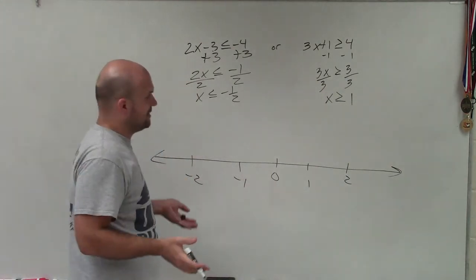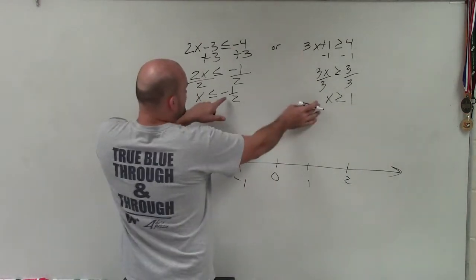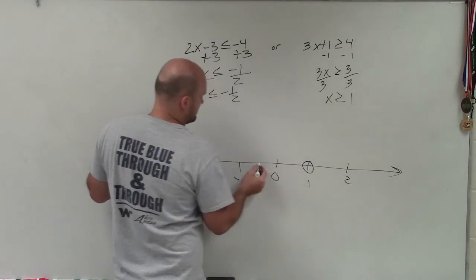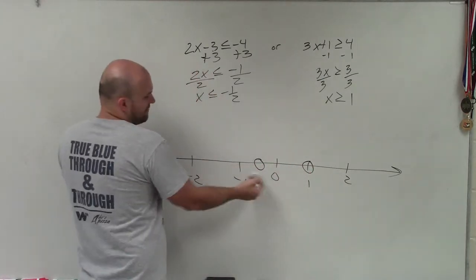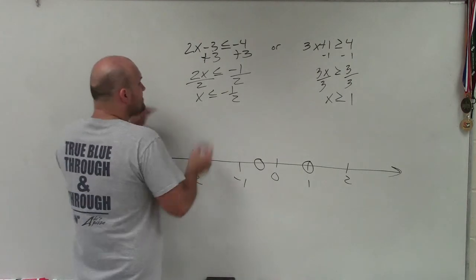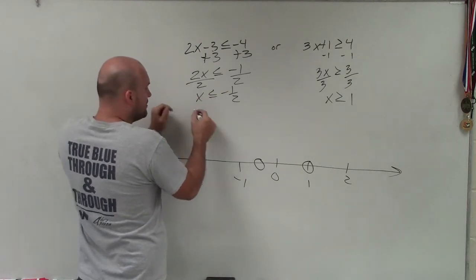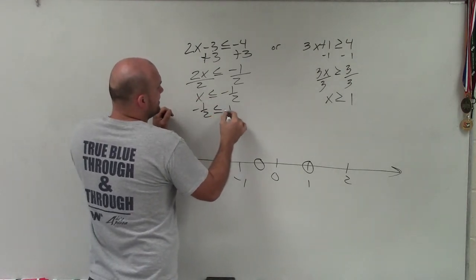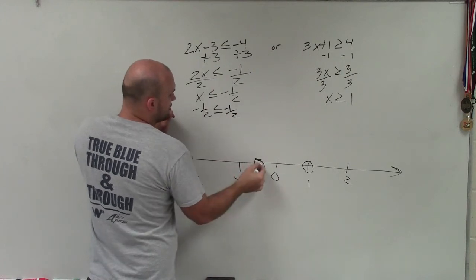So basically, when I'm going ahead and graphing this, at each of these values, I'm going to make a nice big dot. Right? 1 half is halfway, right in between there. Since this is less than or equal to, it's going to be true. So therefore, I shade it in.